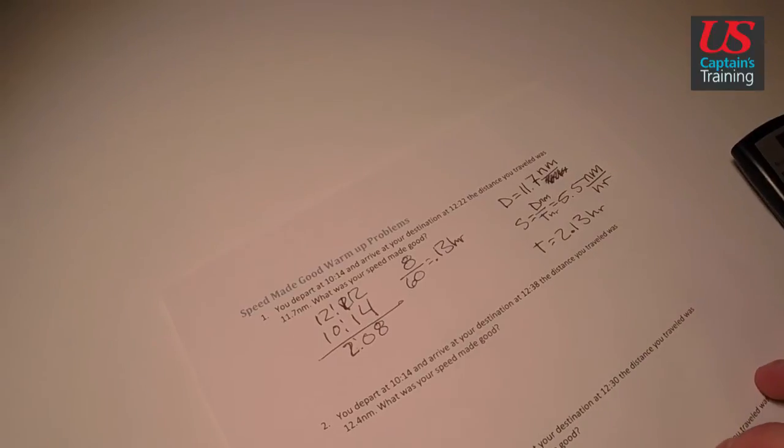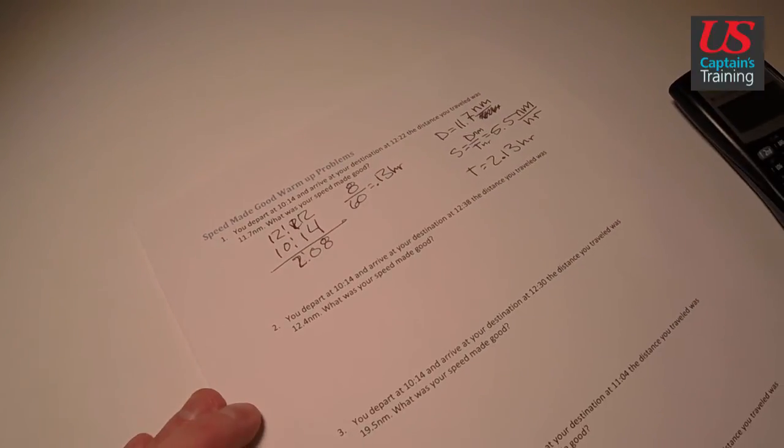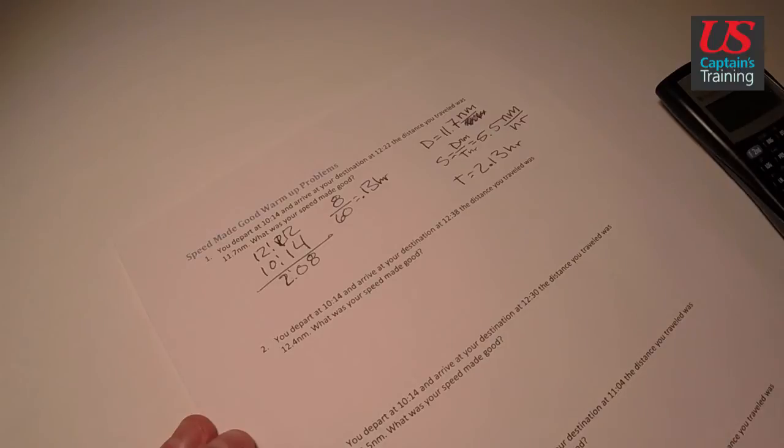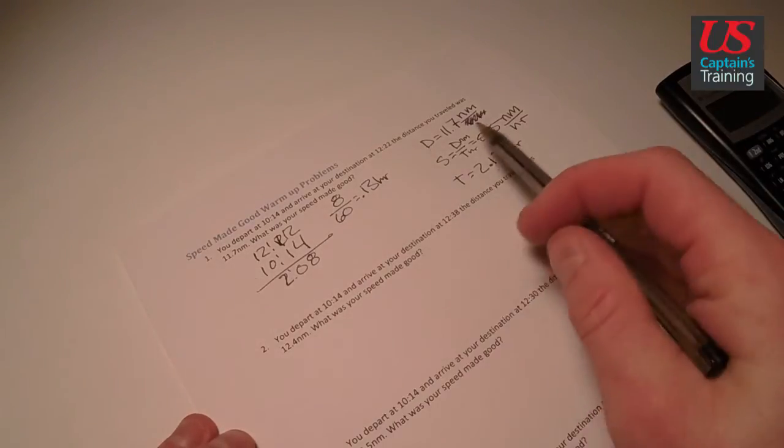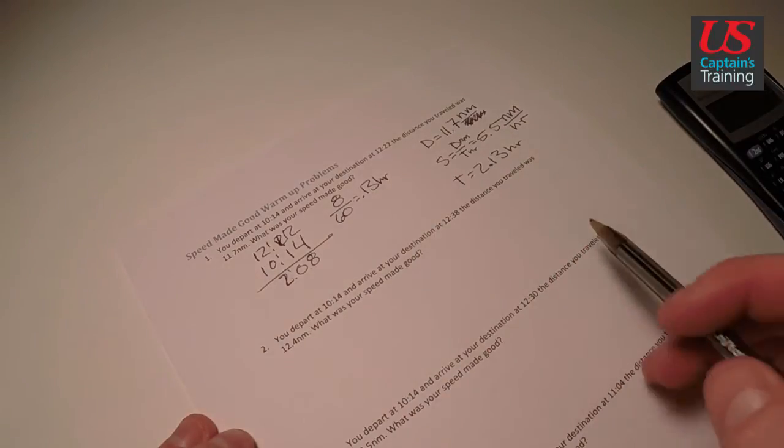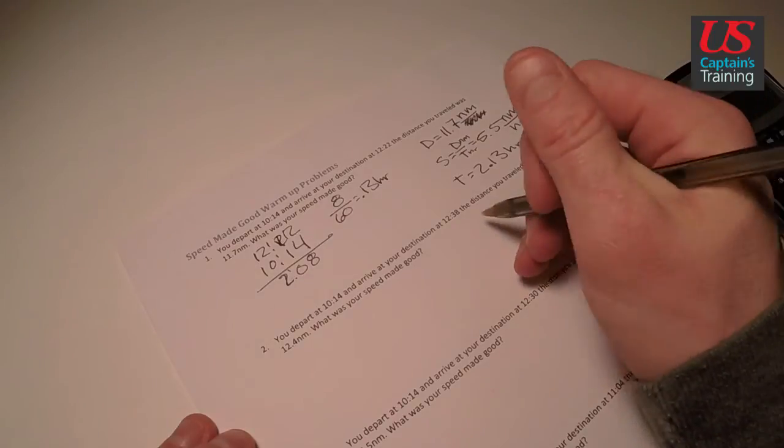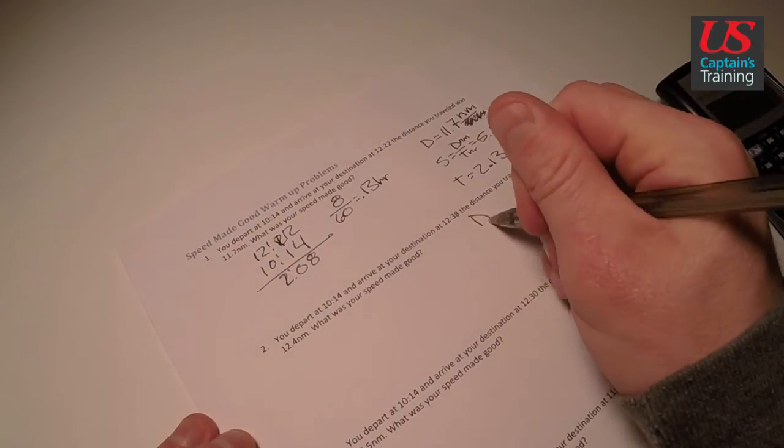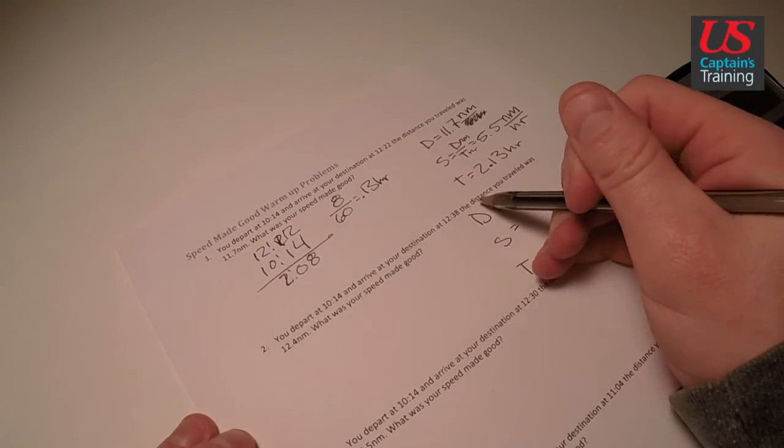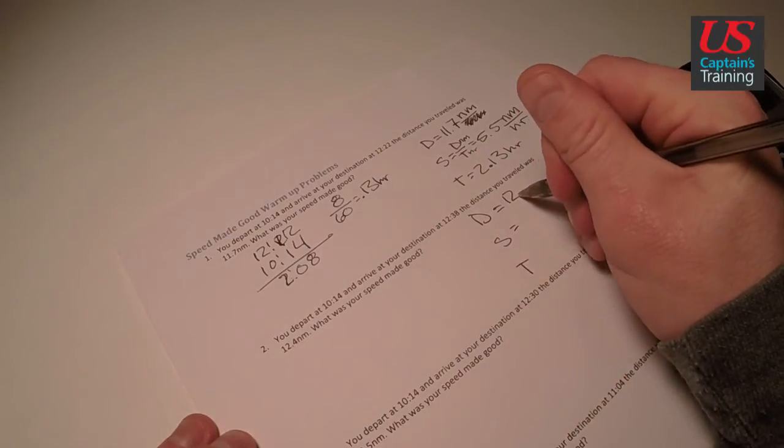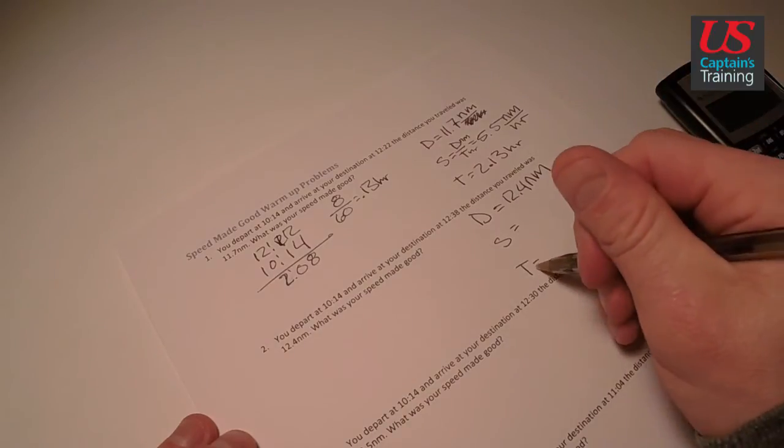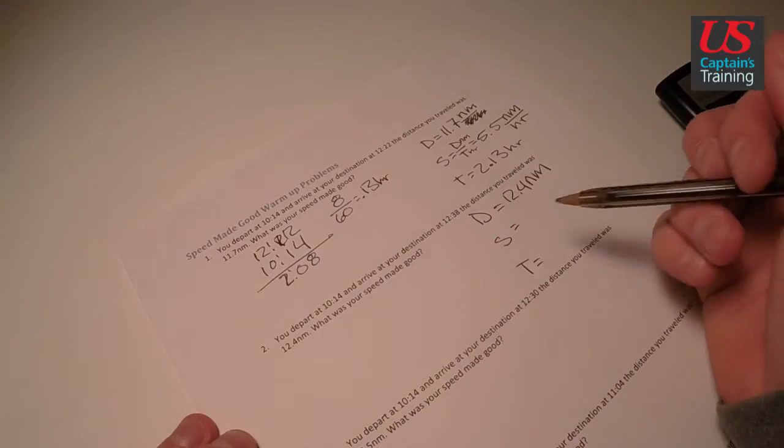The hardest part about this section, really, for people that aren't used to dealing with it, is keeping your units straight. Figuring out, are these hours? Are these minutes? What are we doing here? So we're going to do the same routine for all five of these. We're going to find change in time, convert it to hours, and get our distance, speed, time. Distance is given. The distance was 12.4 nautical miles. And we're looking for the speed and the time we have to calculate.